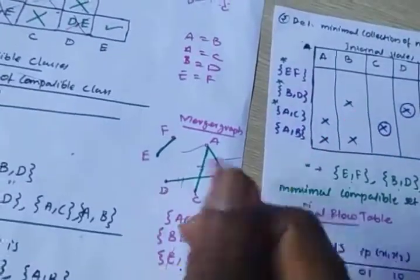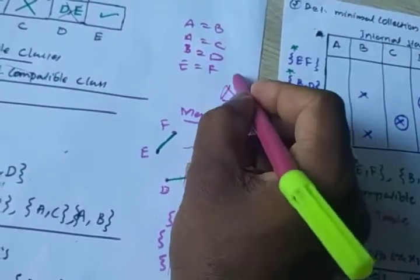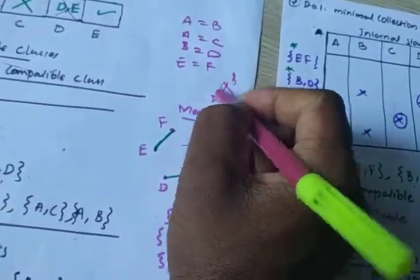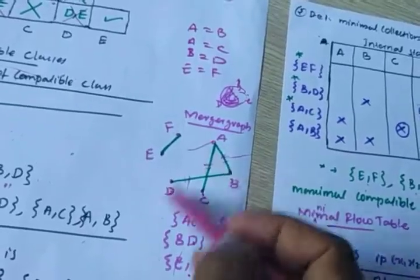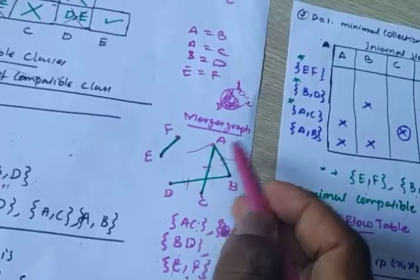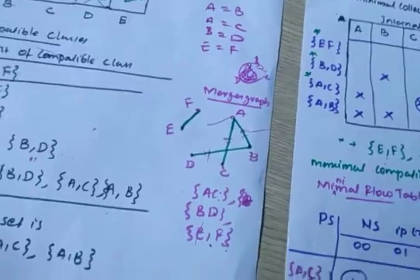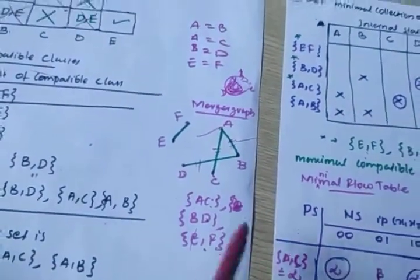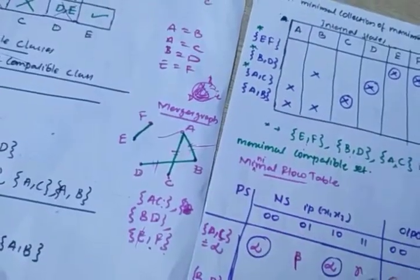That is another method. In this kind of merger graph, if a triangle forms — for example B, C, D all connected — then you can take that triangle as a single set, meaning {B,C,D} is one set. If there is no triangle, the connection is treated as a pair. This is also a valid approach for obtaining the minimal selection of maximal compatible sets.